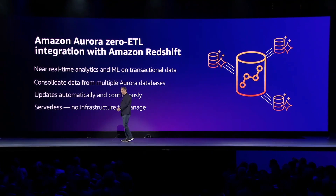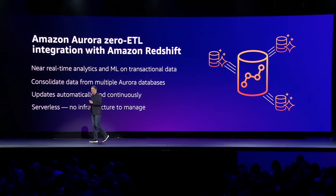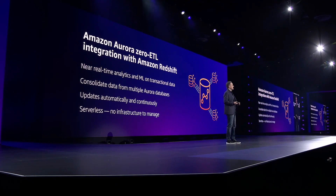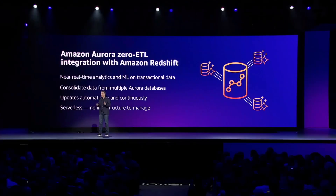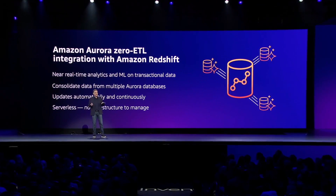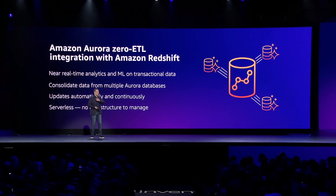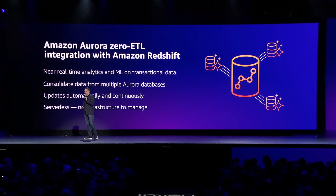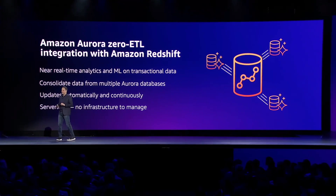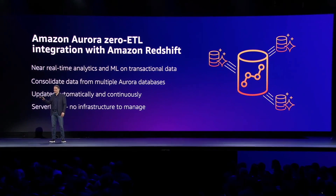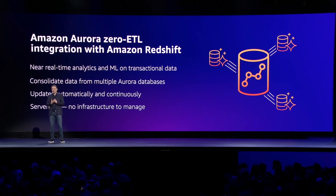Related to integration, Amazon Aurora Zero ETL integration into Amazon Redshift was announced. This allows for automatic and near real-time data integration from Amazon Aurora directly into Redshift. This feature is serverless and dynamically scales up and down depending on data volumes. The problem it solves is not having to manually build ETL pipelines to move data from your transactional Aurora database to your Redshift cluster when performing more intense analytical-based queries.